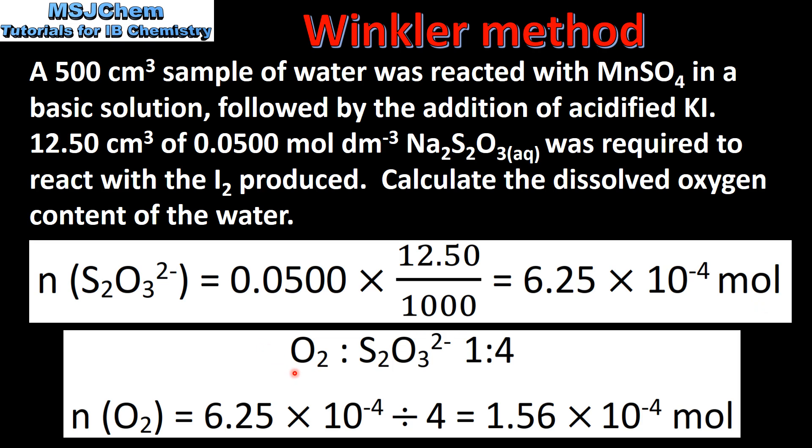Previously we saw that the ratio of oxygen to thiosulfate ions was 1 to 4. So to find the number of moles of oxygen, we divide our number of moles of thiosulfate ions by 4, which gives us 1.56 times 10 to the negative 4 moles of oxygen.